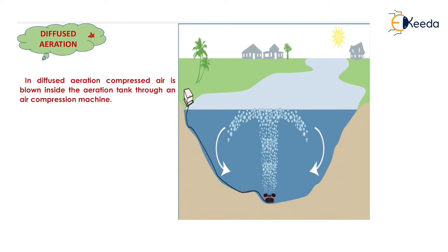The last method, and one of the best, is diffused aeration. In diffused aeration, compressed air is blown inside the aeration tank through an air compression machine. Compressed air is sent by the compression machine, bubbles are created, and these bubbles add oxygen into the water, carrying out the aeration process. This is also the main principle of an aquarium, where water bubbles provide aeration.